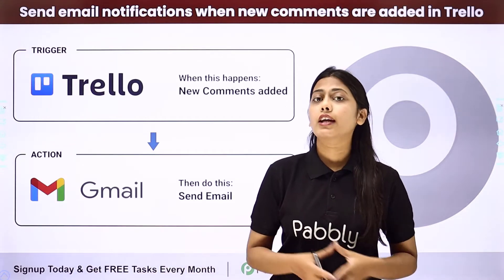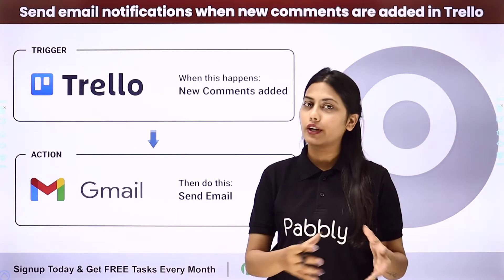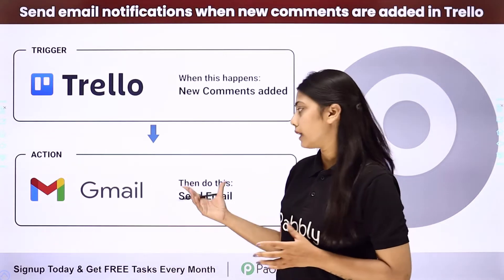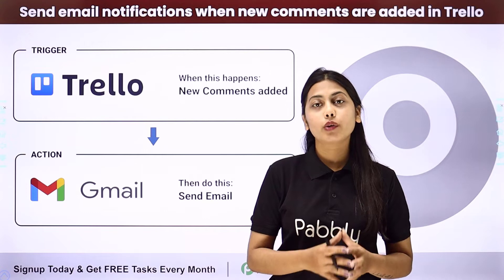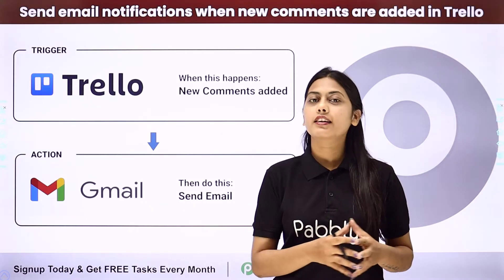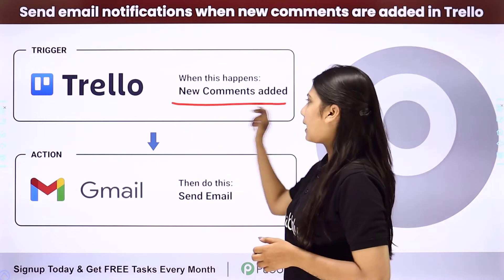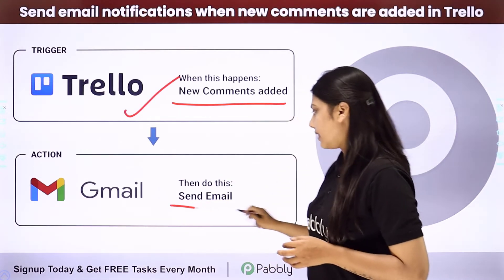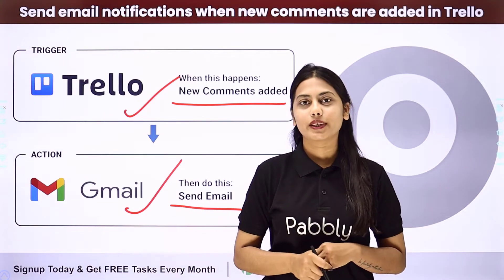This cannot happen automatically because both applications do not have a direct connection between them, making it a tedious manual task. But we can actually automate this process with the help of Pably Connect. We will create an integration where the trigger will be a new comment added in Trello and the action will be to send an email from Gmail.